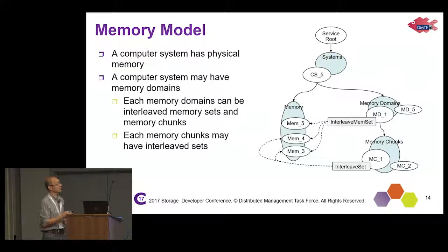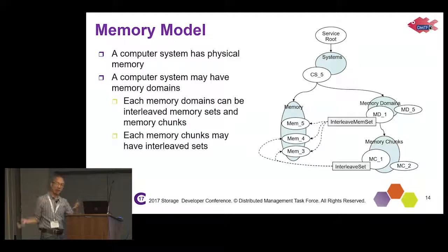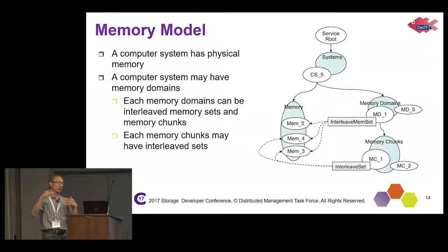Second is the memory model. This is a service root system, as I told you before — computer system. I showed you the JSON for that, which gives you the memory collection. There are individual pieces of memory in there, which are all part of a memory domain and have particular memory chunks. These are all aspects of ways of looking at memory, all associated within the model, so you can understand what is a physical DRAM, what is interleaved together to give you particular types of memory — at whatever level of memory you want to inspect, you can find a way to look at it.